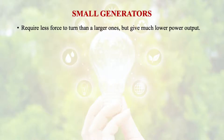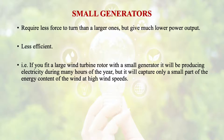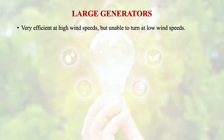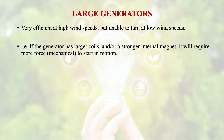Small generators require less force to turn than larger ones but give much lower power output. They are less efficient — if we fit a large wind turbine rotor with a small generator, it will be producing electricity during many hours of the year but will capture only a small part of the energy content of the wind at high wind speeds. Large generators are very efficient at high wind speeds but are unable to turn at low wind speeds, as they require more mechanical force to start motion.